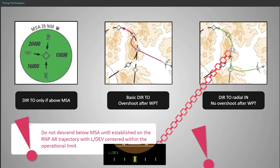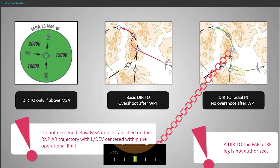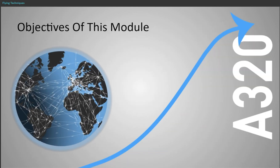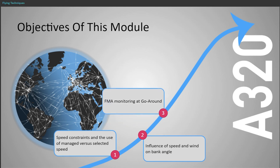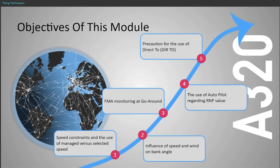Do not descend below MSA until established on the RNP AR procedure trajectory with LDEV centred within the operational limit. Direct-to the final approach fix, or to a waypoint followed by an RF turn, is not authorised. We have now studied the following flying techniques: speed constraints and the use of managed versus selected speed; the influence of speed and wind on the bank angle; FMA monitoring at go-around; the use of autopilot regarding RNP value; and a precaution for the use of direct-to.